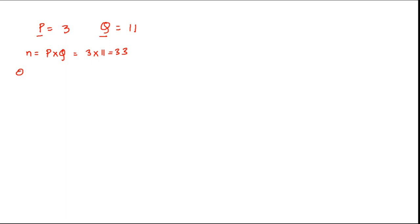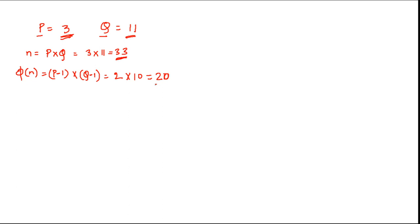After getting N = 33, the next thing to calculate is phi(N). The formula is phi(N) = (P − 1) × (Q − 1) = (3 − 1) × (11 − 1) = 2 × 10 = 20. So phi(N) = 20. We now have four values: P = 3, Q = 11, N = 33, phi(N) = 20.